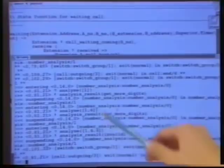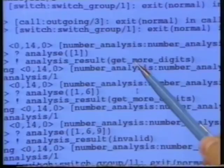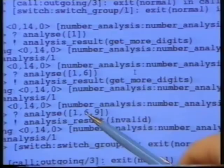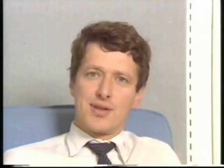I'll now dial an incorrect number. One, six, nine. Here again, we see a symbolic trace of the communications to and from the number analyzer. Again, it got the request to analyze the digit one and returned the result, get more digits. Then it got the request to analyze the digits one, six, and again returned the result, get more digits. Finally, it got the request to analyze the digits one, six, nine. But this time, it returned the result invalid. We've just shown you one of the properties of the language — that it is a symbolic language and that symbolic information is always available.